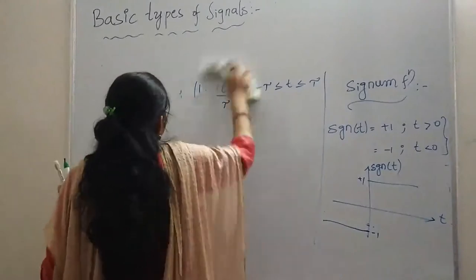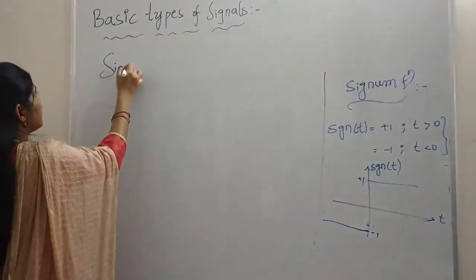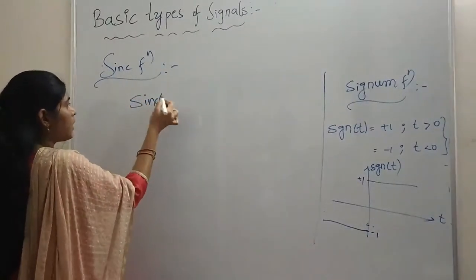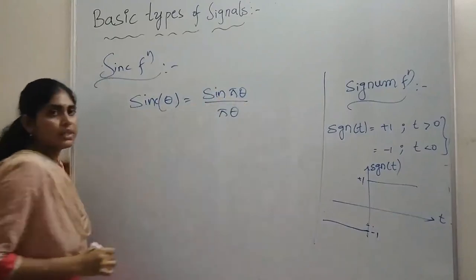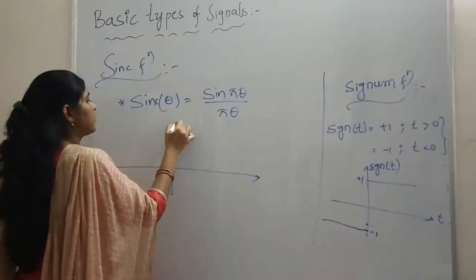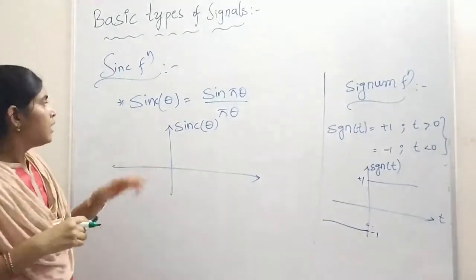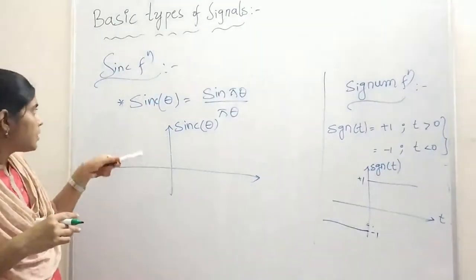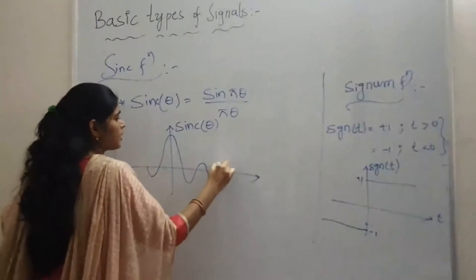The next standard signal is the Sinc function. In general, Sinc of theta is defined as sine(pi·theta) divided by (pi·theta). This is the mathematical formula for the Sinc function. We study Sinc of theta in general because in practice, Sinc functions include an additional constant multiplied with t, such as pi·t or 2t.